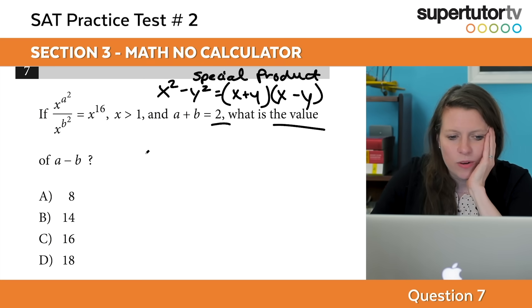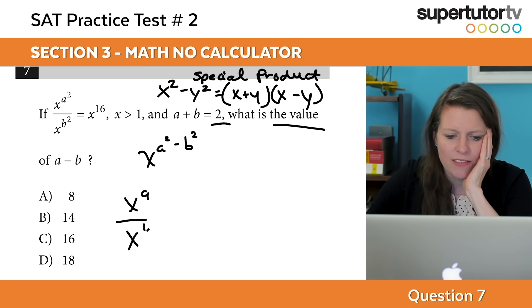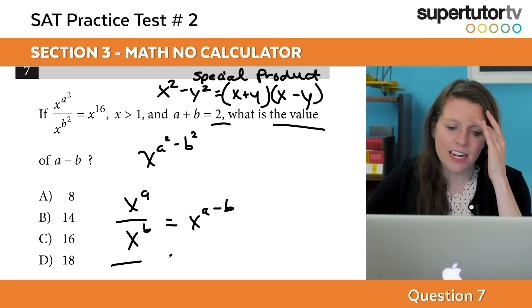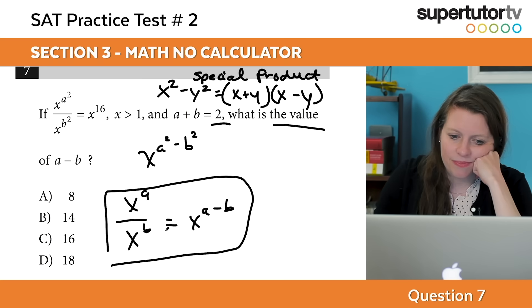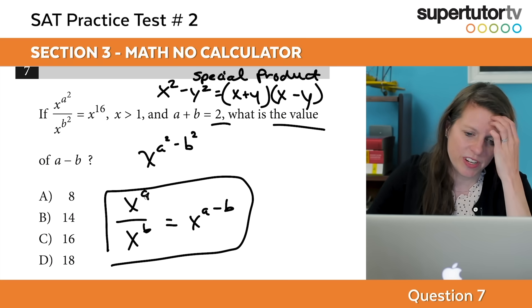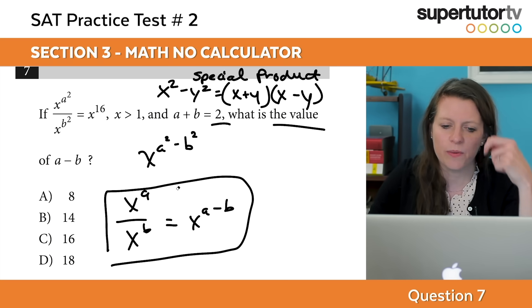So this is x to the a squared over x to the b squared equals x to the a squared minus b squared. How did I get that? Well x to the a over x to the b equals x to the a minus b. This is an exponent rule. If you don't know this rule you need to learn it. You need to know all your exponent rules.